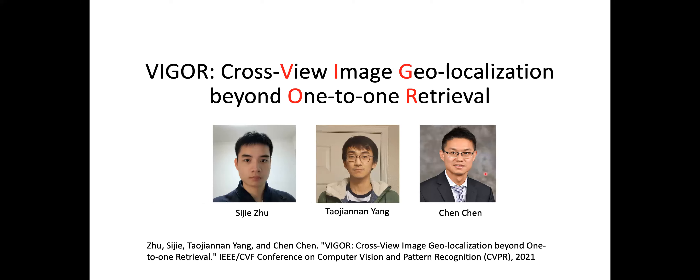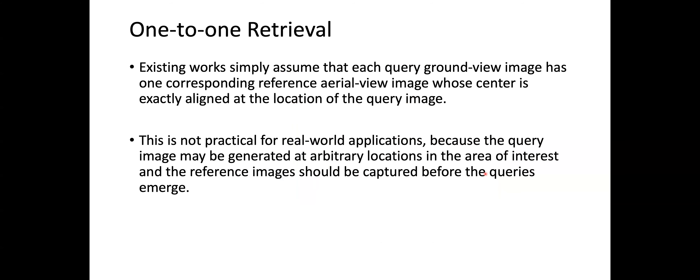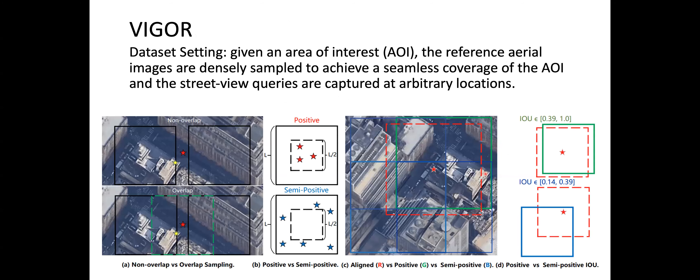Next, I'll talk about our CVPR 2021 paper titled 'Beyond Cross-View Image Geolocalization Beyond the One-to-One Retrieval.' Existing works assume each query ground view image has one corresponding reference aerial image whose center is exactly aligned at the query location. However, this is not practical for real-world applications because the query image may be generated at an arbitrary location in the area of interest, and reference images should be captured before the query. So perfectly aligned one-to-one correspondence is not guaranteed.